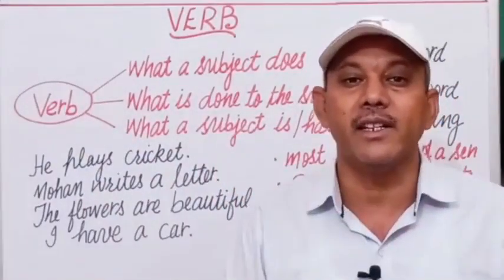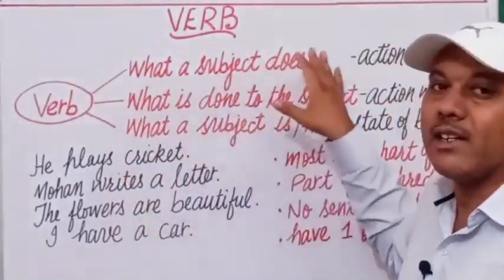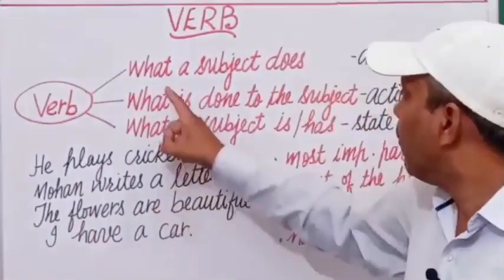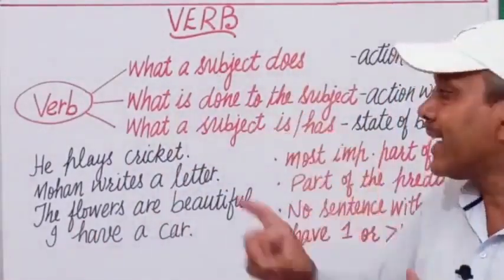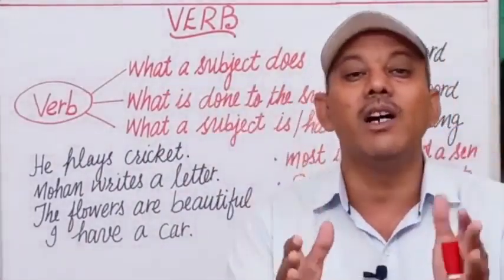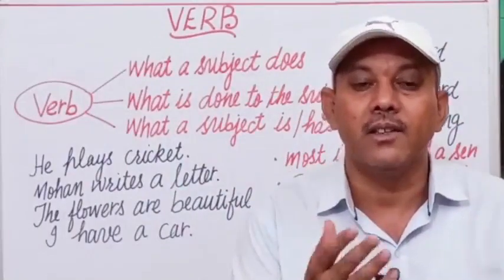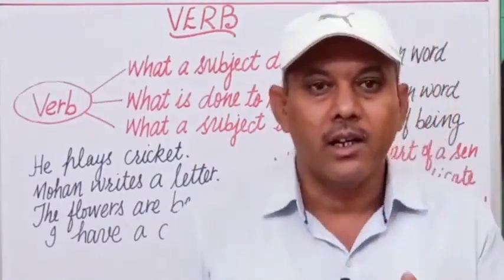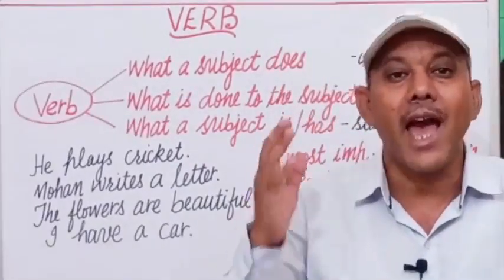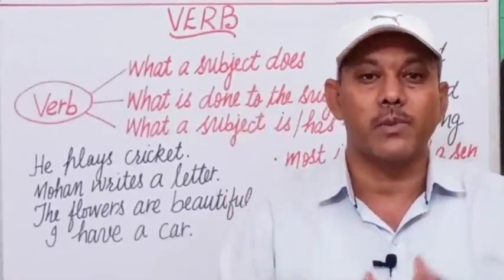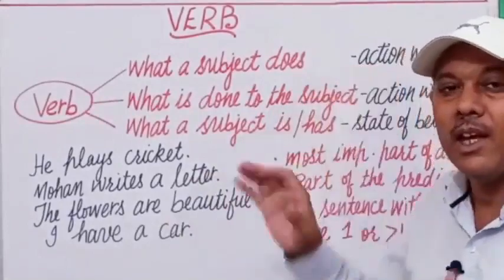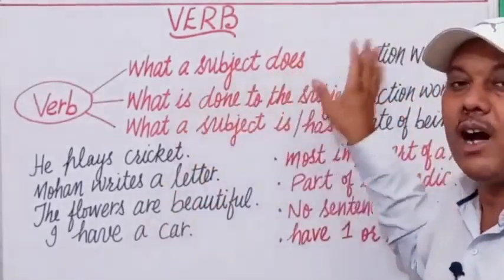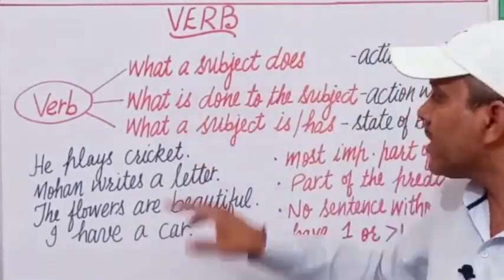A verb tells us about a person, thing, or subject — what a subject does. The word that tells us what a subject does is an action word. For example: speak, teach, write, read, play, run, sit, stand. These action words are known as verbs. Not only action words in active form, but these action words can also be found in passive form.